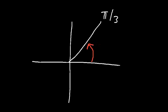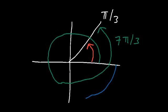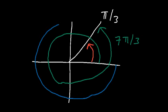Now 7 pi over 3: starting from pi over 3, we count 2 pi over 3, 3 pi over 3 which is pi, 4 pi over 3, 5 pi over 3, 6 pi over 3, and then 7 pi over 3 — landing at the same spot. For negative 5 pi over 3, we travel in the other direction: negative 1 pi over 3, negative 2 pi over 3, negative 3 pi over 3, negative 4 pi over 3, and that's negative 5 pi over 3.